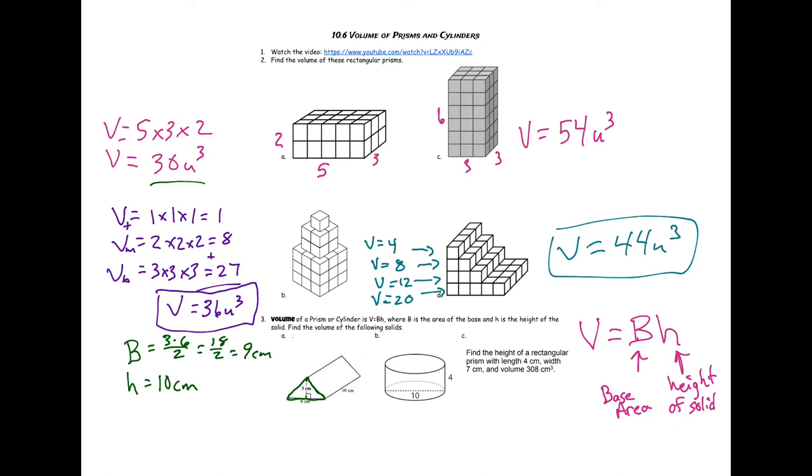Notice here that the h in the height of the solid is different than the height in base times height divided by two. The height of the base is different than the height of the entire solid, the three-dimensional shape. So three times six divided by two - 18 divided by two - we have 9 centimeters as the area of the base. Then once I have those two numbers, volume equals base times height. Volume equals 9 times 10, so my volume is 90 centimeters cubed. Remember, with volume it's always cubed for our label.